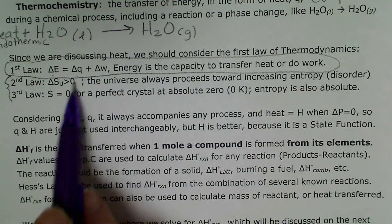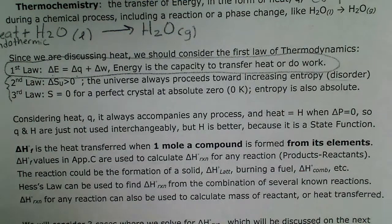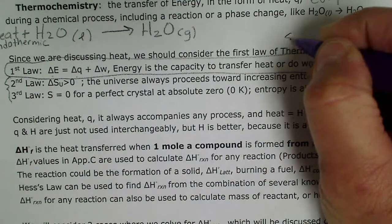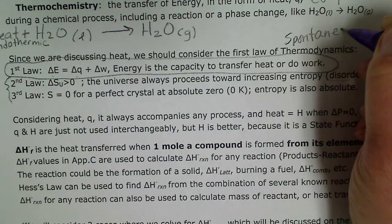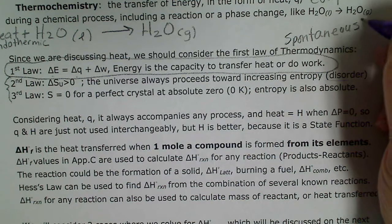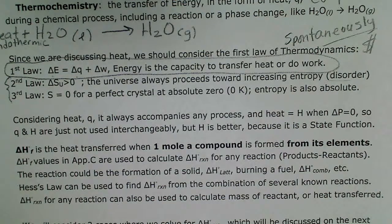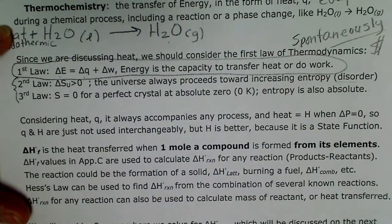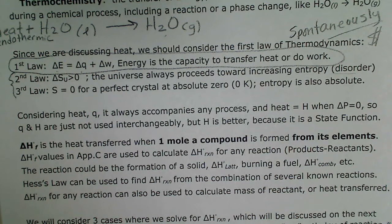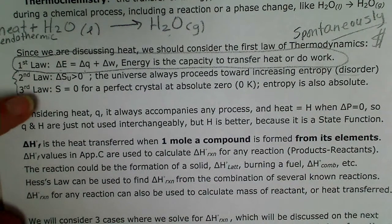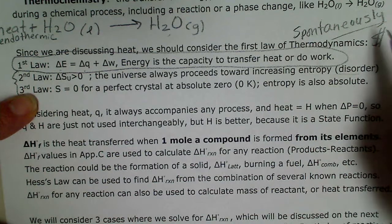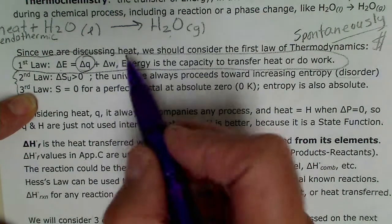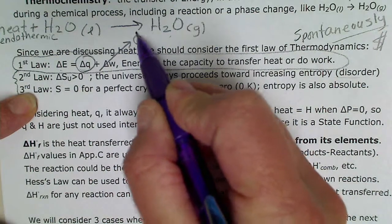The next two laws of thermodynamics deal with entropy, which is disorder — we'll get to that later. Part of what thermodynamics explains is what the universe does spontaneously, which is of interest to chemists. If something occurs spontaneously we make money off of that; if we have to add energy to cause a reaction, that costs money. We're going to focus on the first law and specifically on Q, which is heat. In chemistry, the work term is often zero.